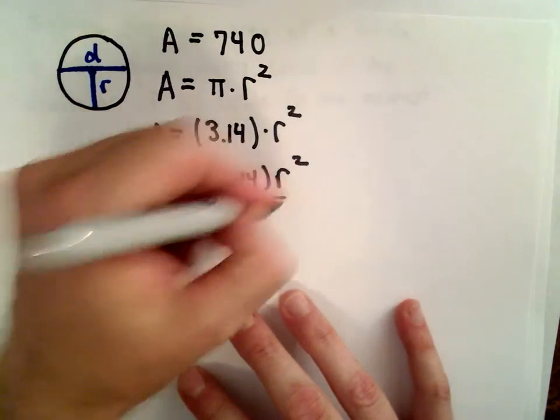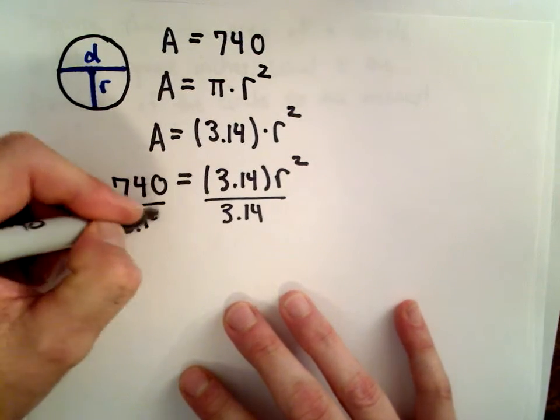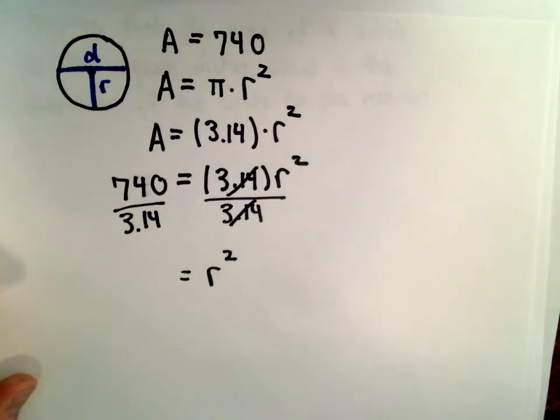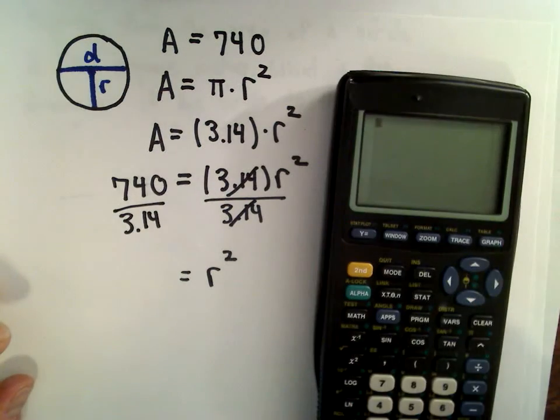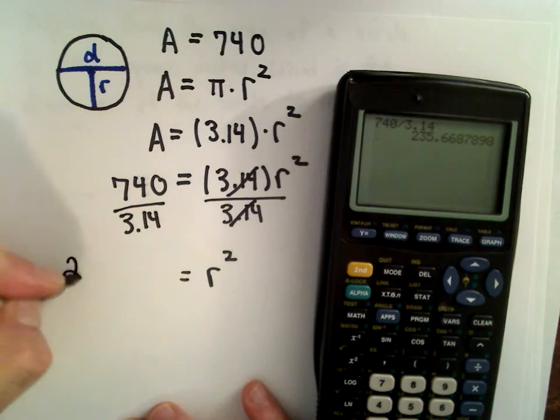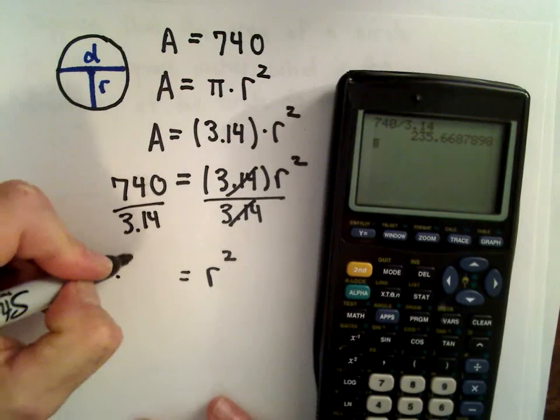So the first thing I'm going to do is divide both sides by 3.14. That's going to leave us with r-squared on the right side. So here I'm going to use my calculator. Let's see, 740 divided by 3.14. I'm getting that to be 235.668, so I'm going to round that to 235.67.